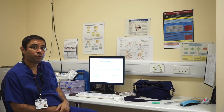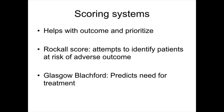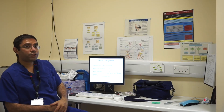The ROCKALL score attempts to identify patients at risk of adverse outcomes and is a marker of mortality. The Glasgow Blatchford predicts the need for treatment — a low Glasgow Blatchford score suggests no inpatient management is needed, while a high score predicts the patient will require blood transfusion or inpatient intervention such as upper GI endoscopy.